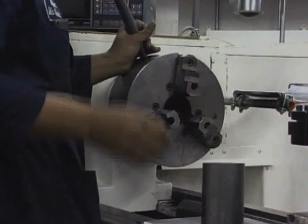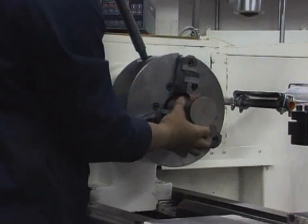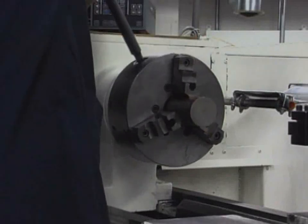Three-jaw universal chucks are the most common. All three jaws move in tandem to grab a round workpiece, center it, and grip it.